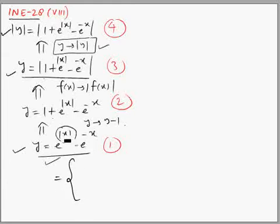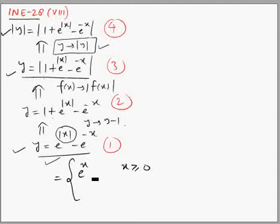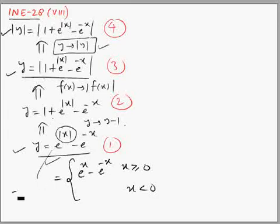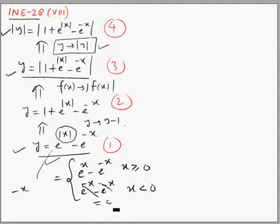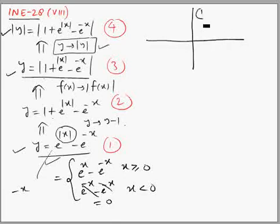First, we simplify further using cases. When x ≥ 0, |x| = x, so it becomes e^x - e^(-x). When x < 0, |x| = -x, so it becomes e^(-x) - e^(-x), which cancels out and equals 0. So the graph of the first function is 0 for x < 0.